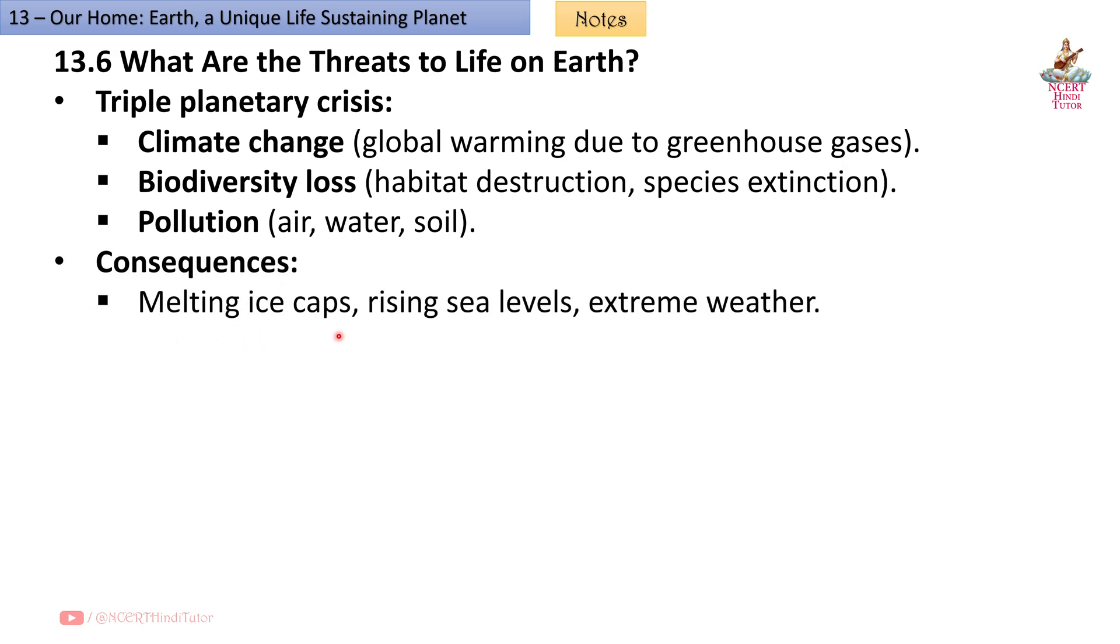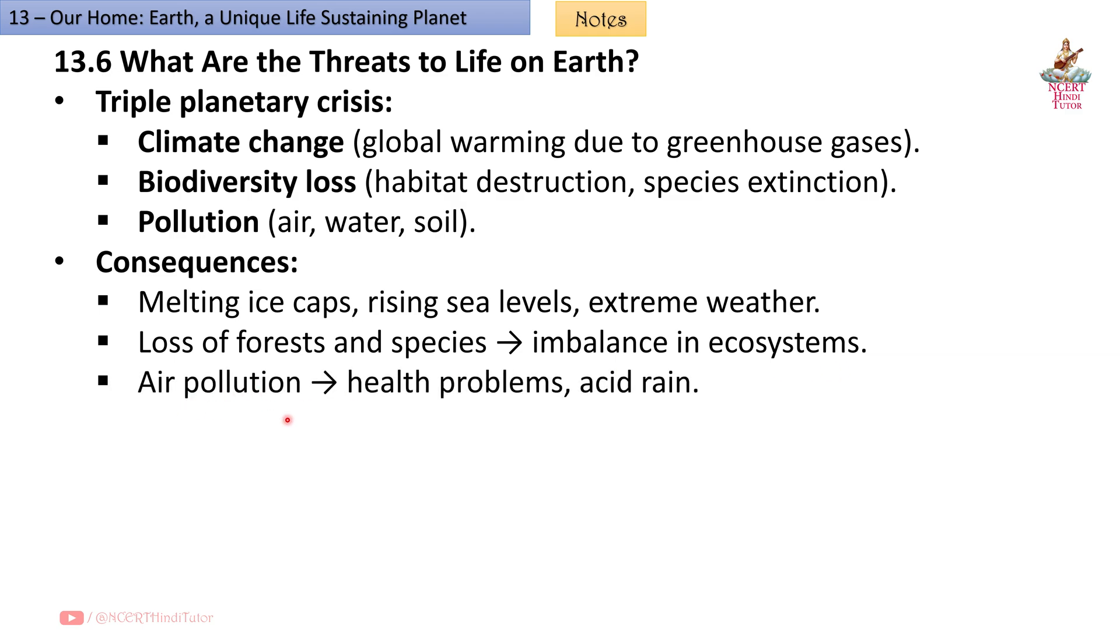Consequences: Melting ice caps, rising sea levels, extreme weather, loss of forests and species, imbalance in ecosystems. Air pollution causes health problems and acid rain. Water and soil pollution lead to unsafe water and reduced crop yield.